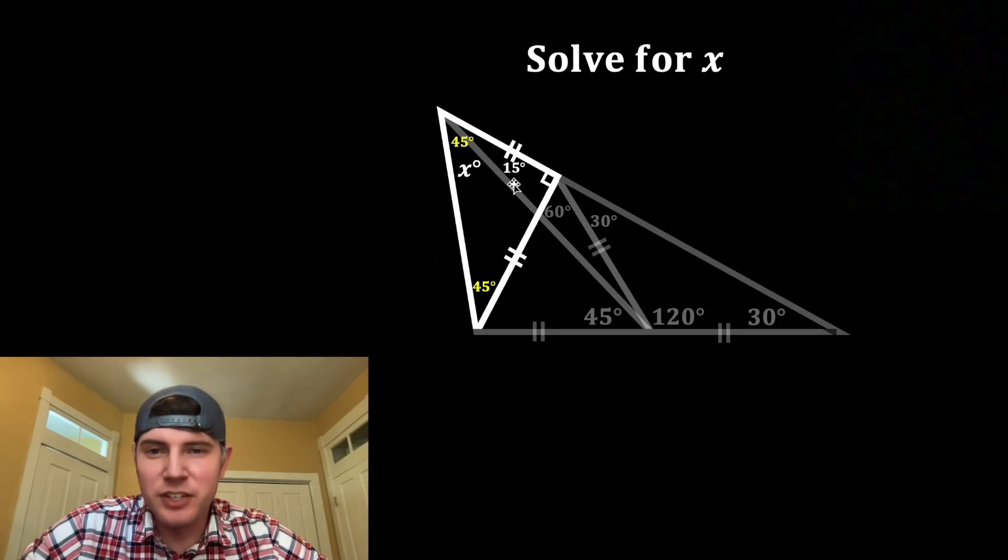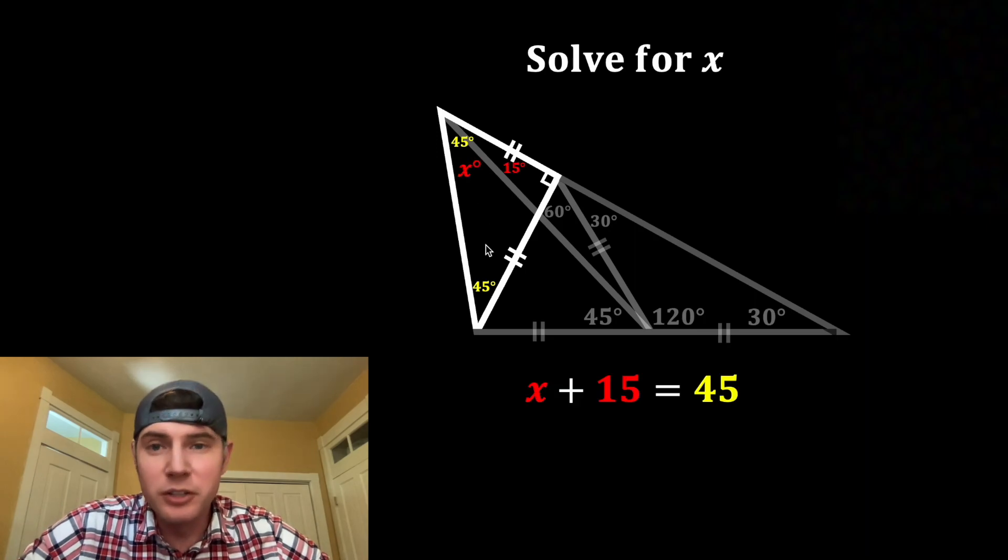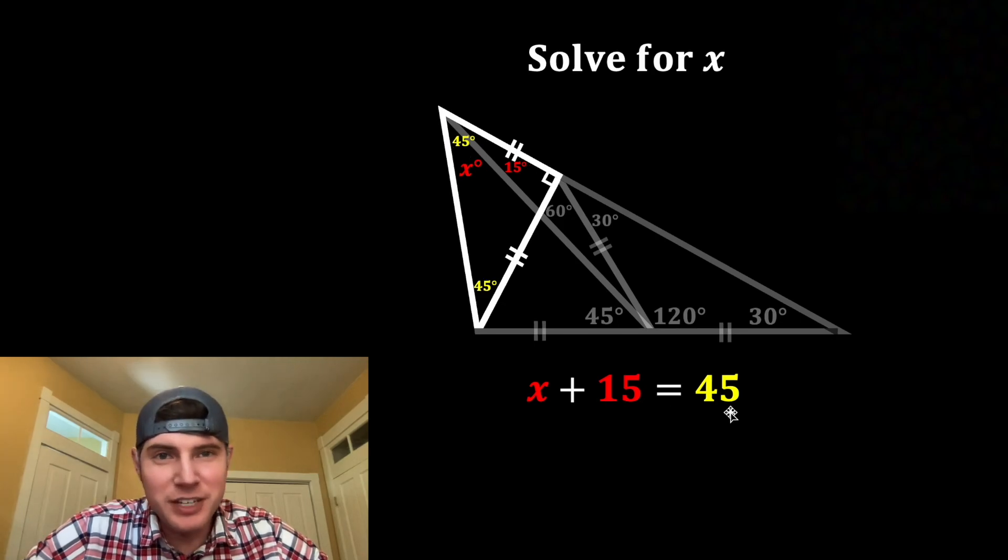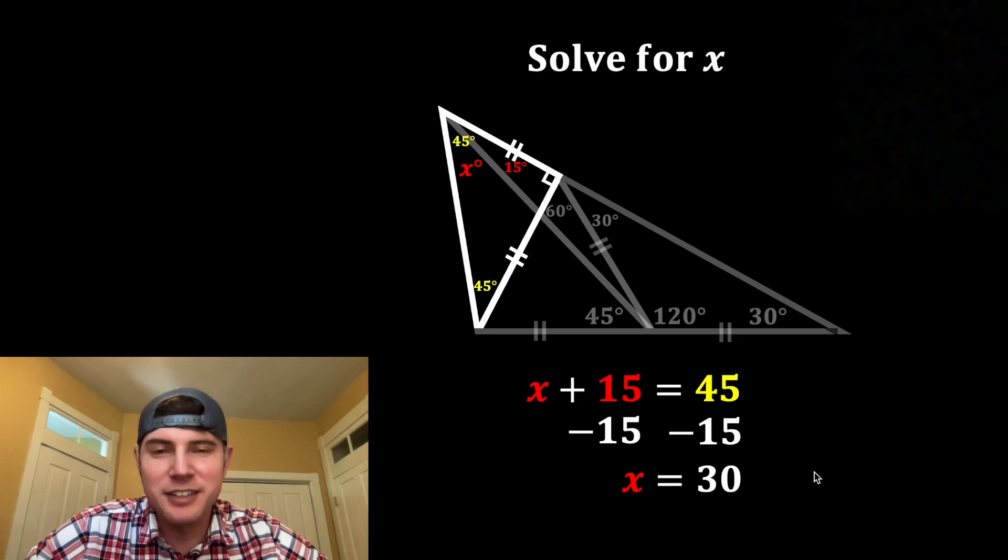Let's look at this x degrees and this 15 degrees. Let's make them red. We know that the sum of these two angles will be equal to this larger angle. So we have x plus 15 is equal to 45. After we subtract 15 from both sides, we find that x is equal to 30.